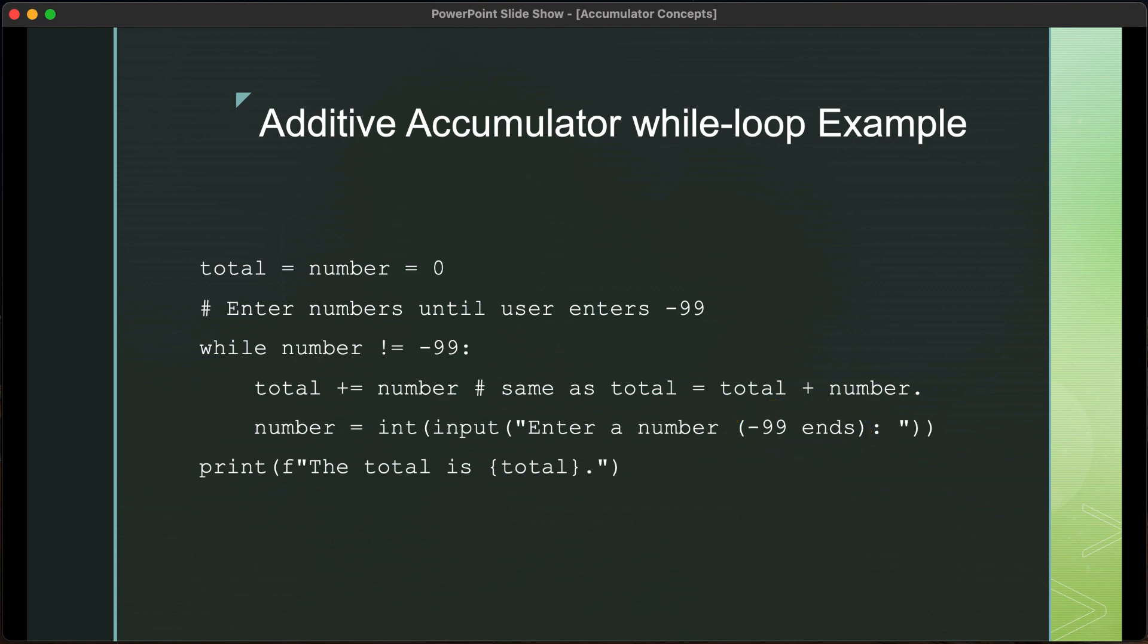The user can then enter numbers until they're done, and then they can enter negative 99, which will terminate. And again, the print statement is outside the loop, which will then print the total.